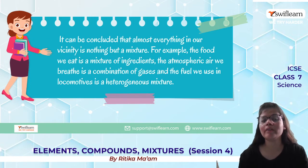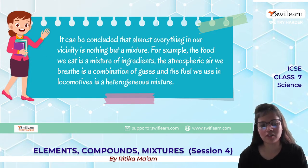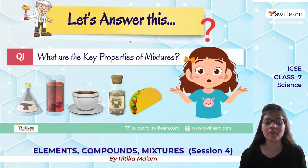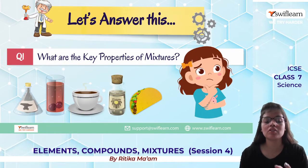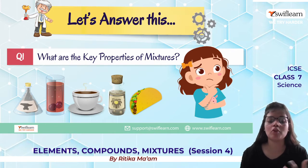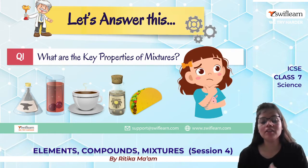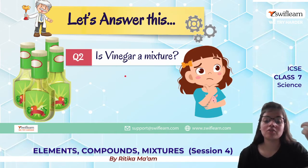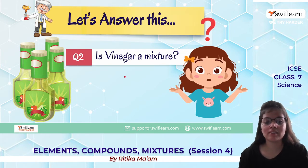It can be concluded that almost everything in our vicinity is a mixture — the food we eat, the air we breathe, the fuel we use. Key properties of mixtures: composition is not uniform throughout; they can be homogeneous (same composition) or heterogeneous (different composition); and they can be separated physically because they have two or more phases. For example, vinegar is a mixture of acetic acid and water.